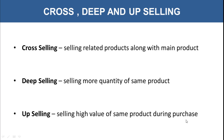Upselling is selling a higher value version of the same product during purchase. For example, if a customer comes to buy a phone, you offer a higher value phone of the same brand — with more RAM and higher specifications — which costs a bit more. This is upselling because you are selling a high value version of the same product. All of cross selling, deep selling, and upselling need to be done precisely so that you are satisfying the customer and not irritating or forcing them to purchase many products at the same time.